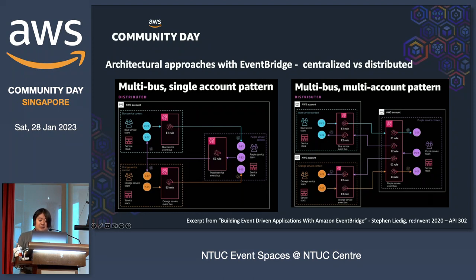There is also another example: a distributed pattern where each service has its own event bus to communicate with other event buses. This is actually good for multiple DevOps teams collaborating on large-scale development while keeping service autonomy. If EventBridge in a certain region fails for a while, you can route events to another region in the same AWS account to minimize the effect of the failure. However, this does not help with reducing complexity.